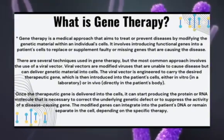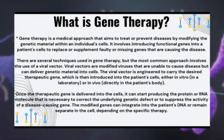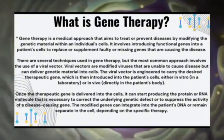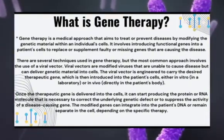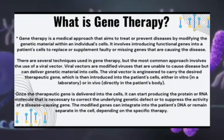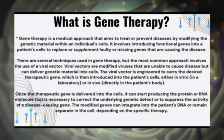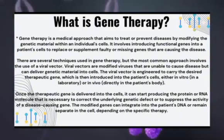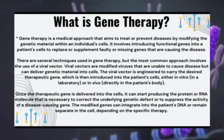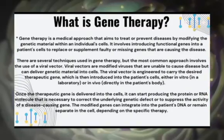Once the therapeutic gene is delivered into the cells, it can start producing the protein or RNA molecule that is necessary to correct the underlying genetic defect or suppress the activity of a disease-causing gene. The modified genes can integrate into the patient's DNA or remain separate in the cell, depending on the specific therapy.